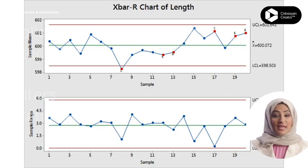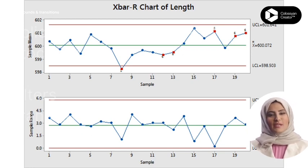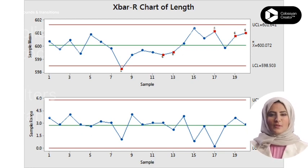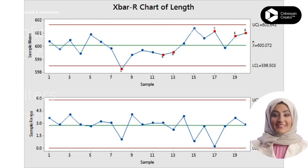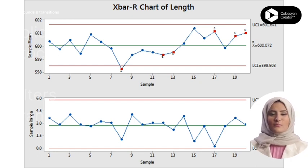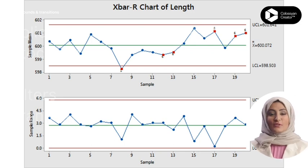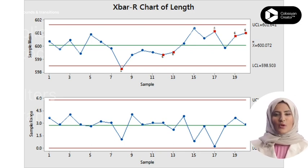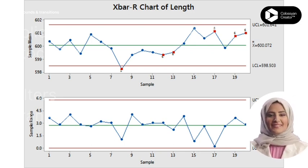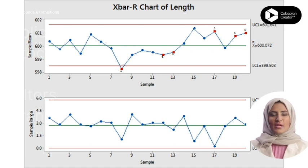This is an example of an X-bar R chart. Quality engineers at a manufacturing plant monitor part lengths. They use process data to create an X-bar R chart — a control chart that evaluates both the process mean (X-bar) and spread (R chart for range).